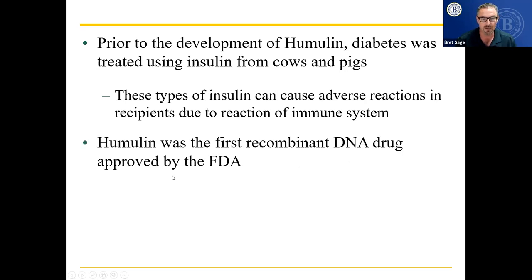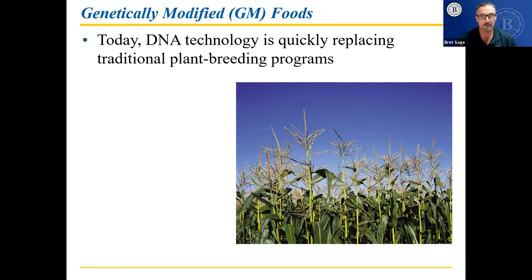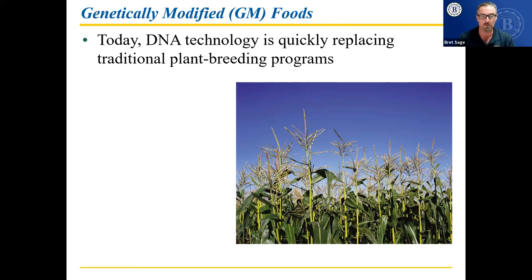Humulin was the first recombinant DNA drug approved by the FDA and many more have been approved since. Genetically modified foods — DNA technology is quickly replacing traditional plant breeding programs. Traditional breeding meant if you had two kinds of corn with appealing features, you took pollen from one and put it on the female part of the other, and what came out were called hybrids.